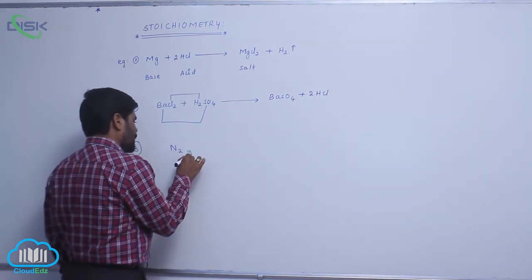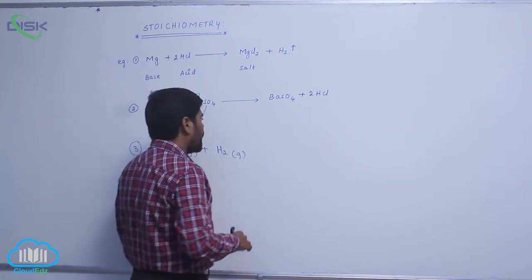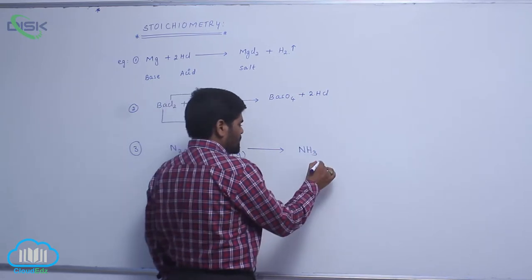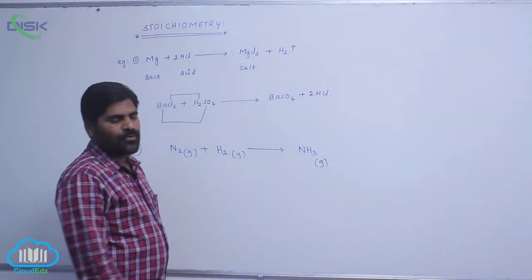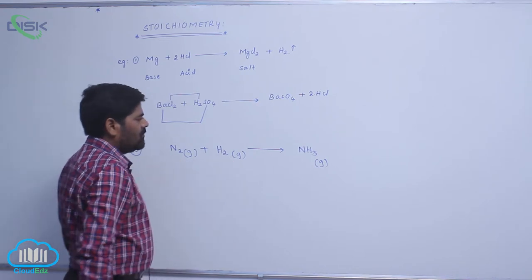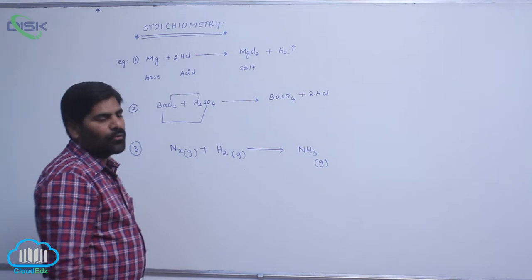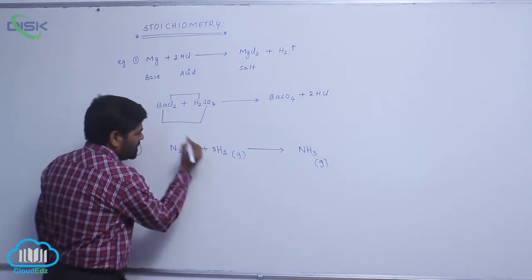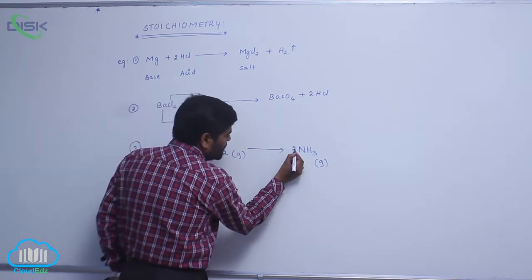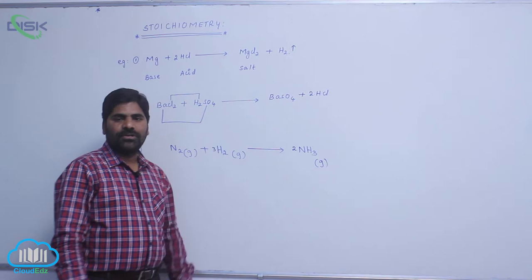A third balancing example: N₂ gas reacts with hydrogen gas to form NH₃ gas — ammonia gas is formed. Here there are 2 nitrogens and 2 hydrogens on the reactant side, but 3 hydrogens are needed for NH₃. If we put a coefficient of 3 for H₂, that gives 6 hydrogens; then putting 2 for NH₃ gives 2 nitrogens and 6 hydrogens on both sides. So this is a balanced chemical equation.